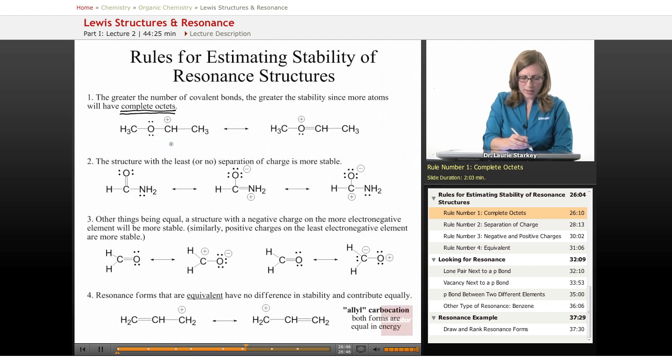So when we compare these two structures, we see that this carbon is missing an octet. While on the second structure, every atom has a complete octet, a total of eight electrons around it. So this is the more important, this is more stable. We also say we describe it as being a better contributor.